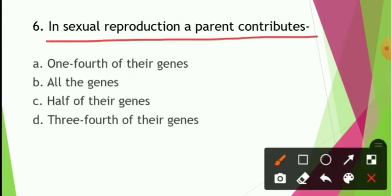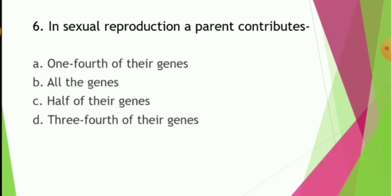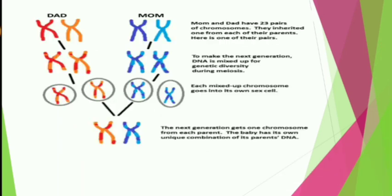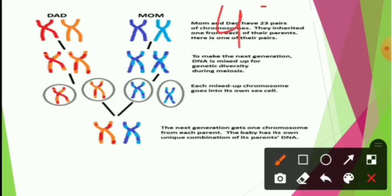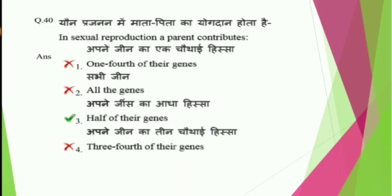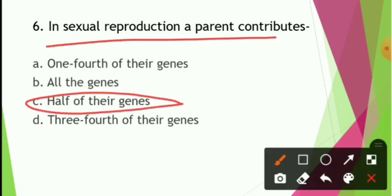Next question: What is the parental gene contribution to offspring — one-fourth, all genes, half, or three-fourth? In this case, the human body has a total of 46 chromosomes. Males contribute 23 chromosomes and females contribute 23 chromosomes. So basically, each parent contributes half of the genes. The answer is option C — half of their genes.